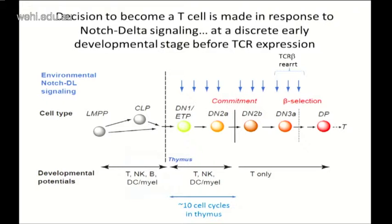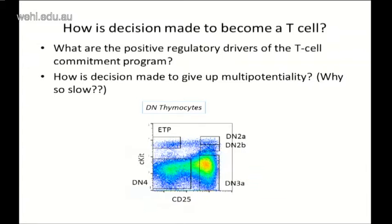Now the question is: why does commitment take 10 cell divisions in the thymus? Why does it take so long, and what is actually happening to the cells such that they give up multi-potentiality at that stage and not earlier? We'd like to define this problem by asking what are the positive regulatory drivers that actually impose the T cell program on these precursors, and also how is the decision made to give up multi-potentiality, and why is this so resisted for such a long time?